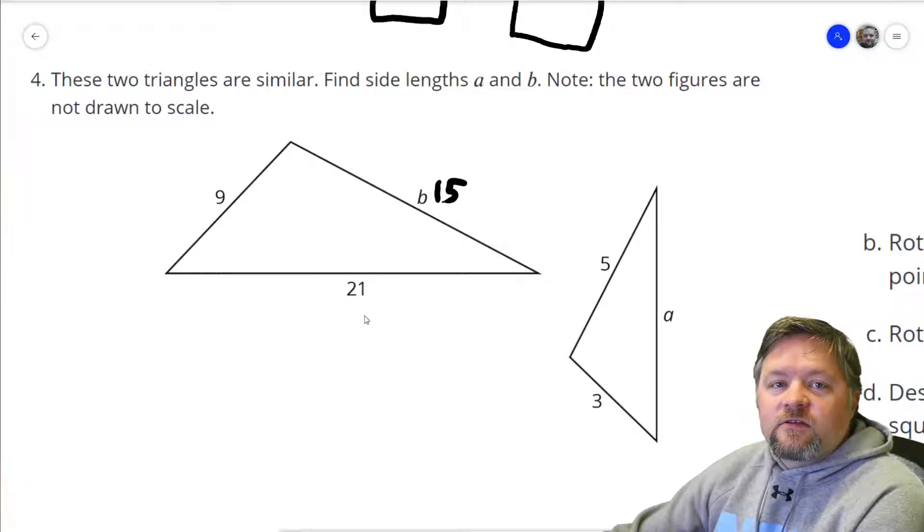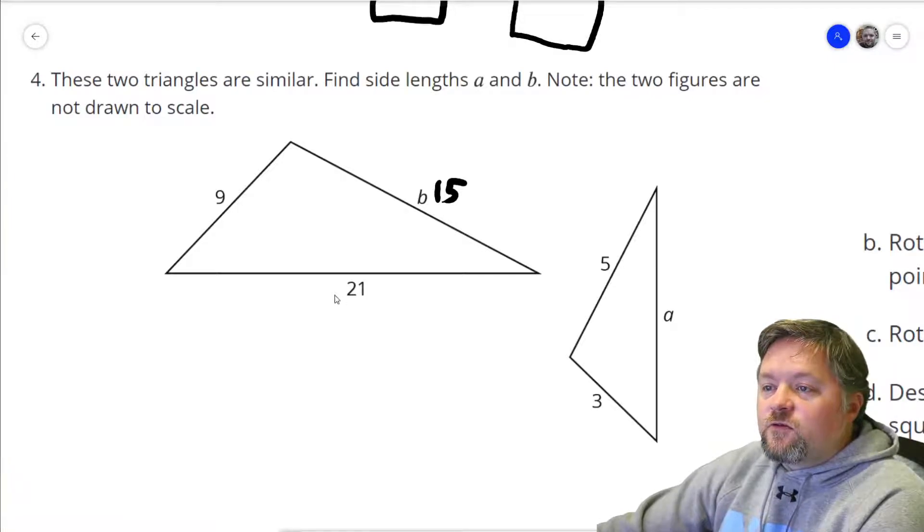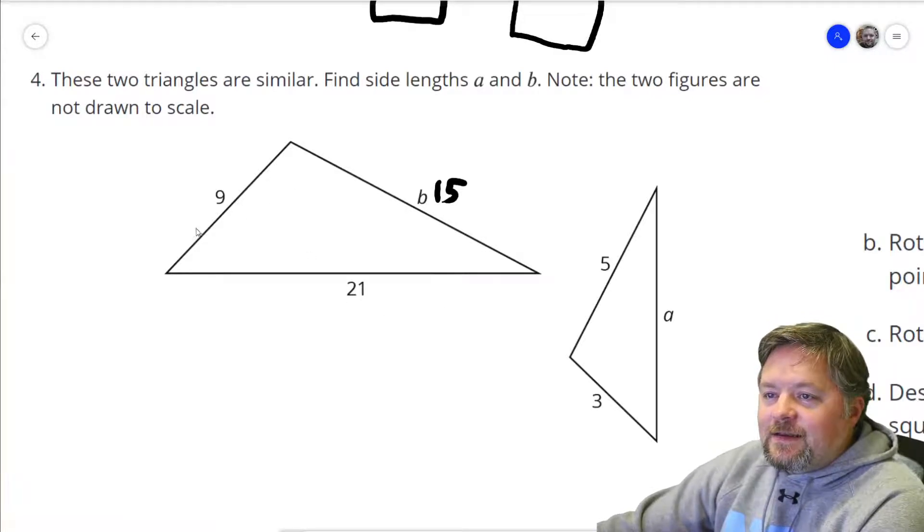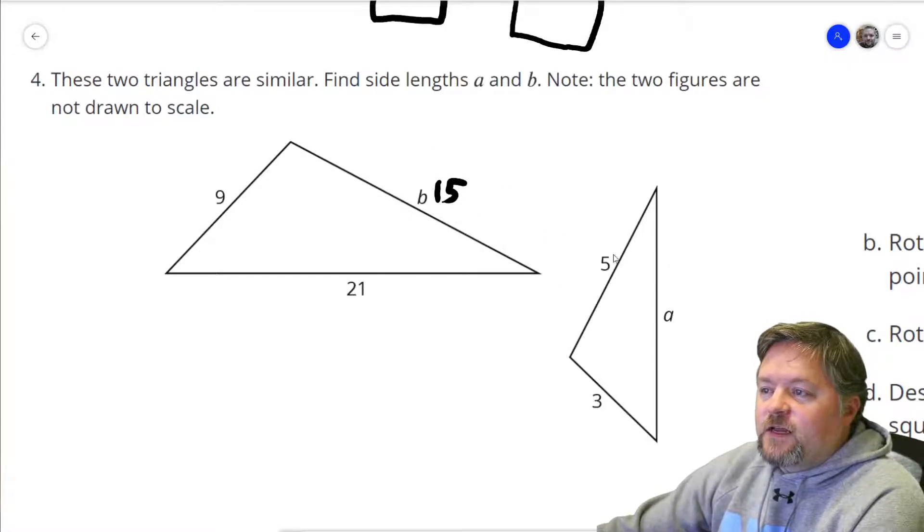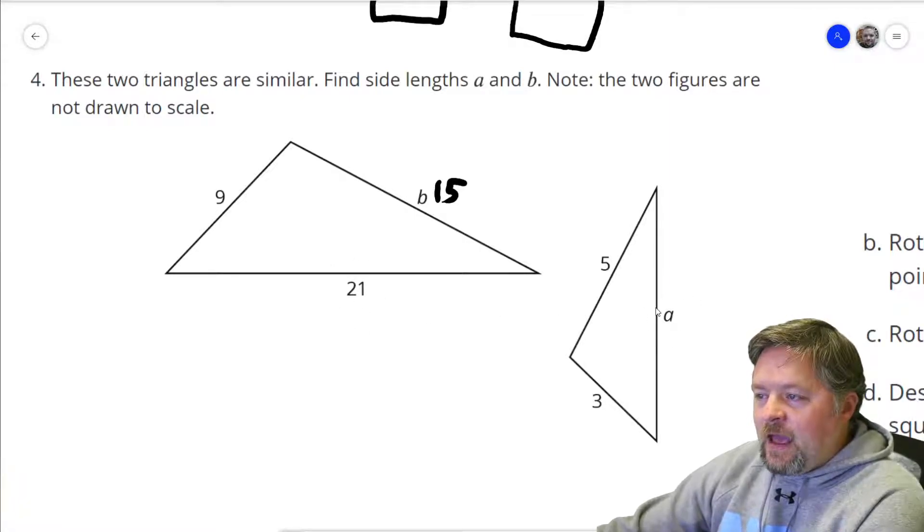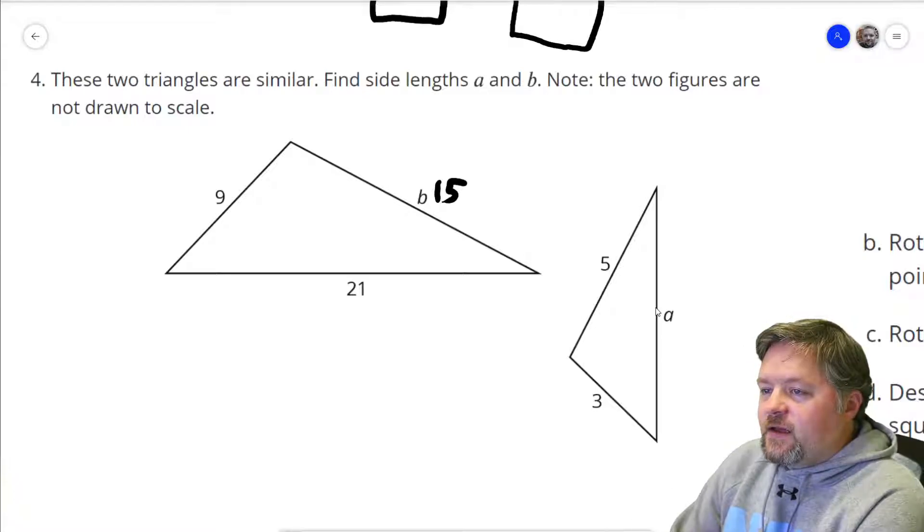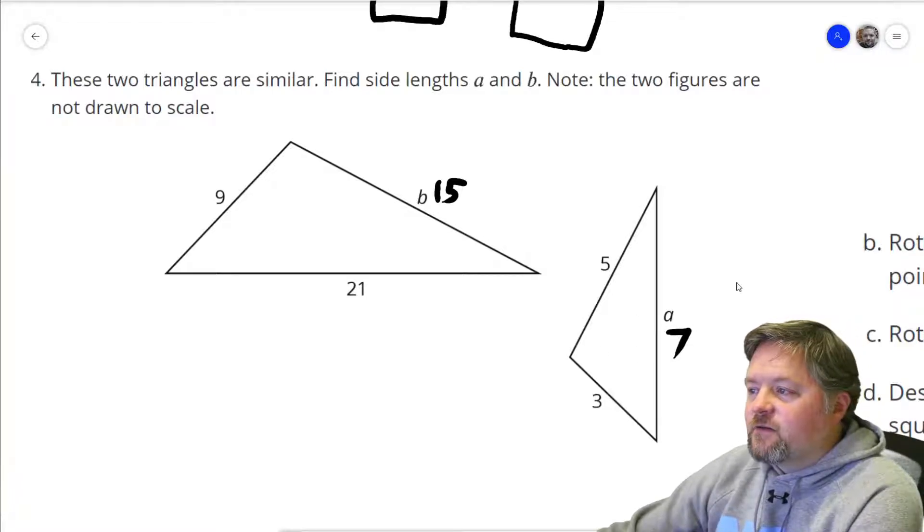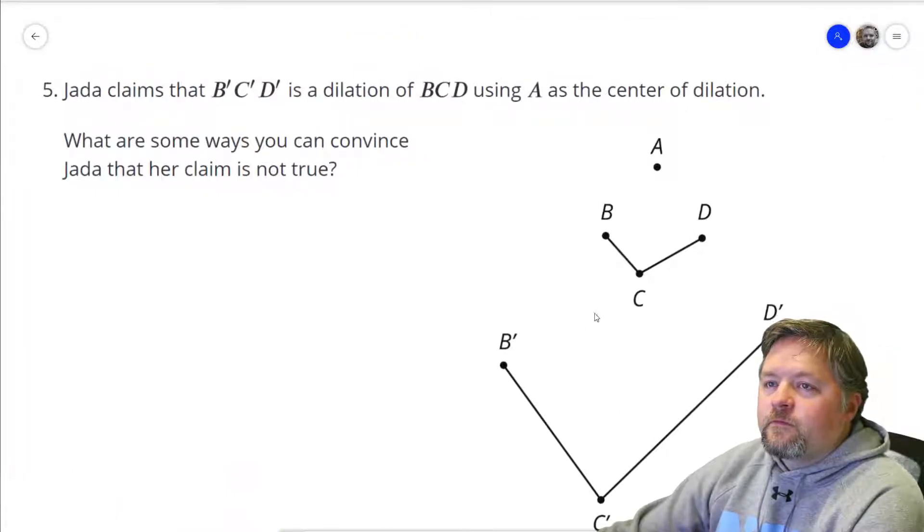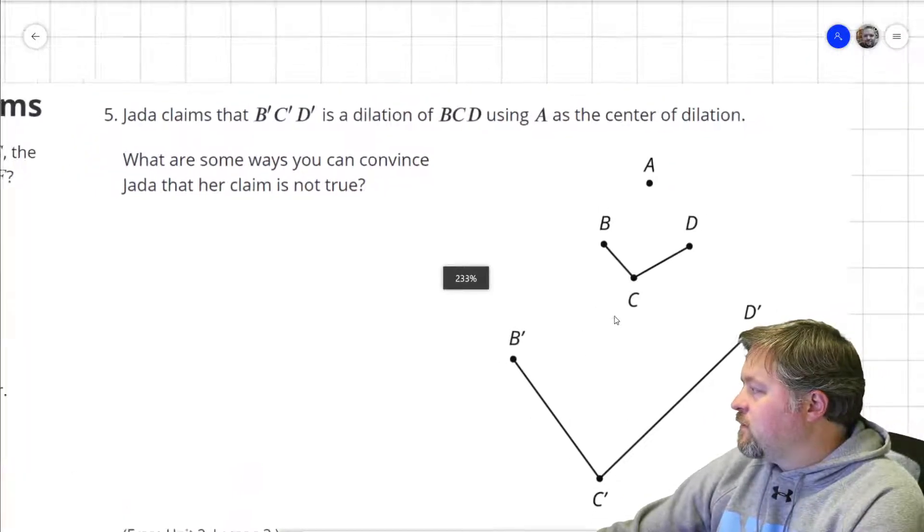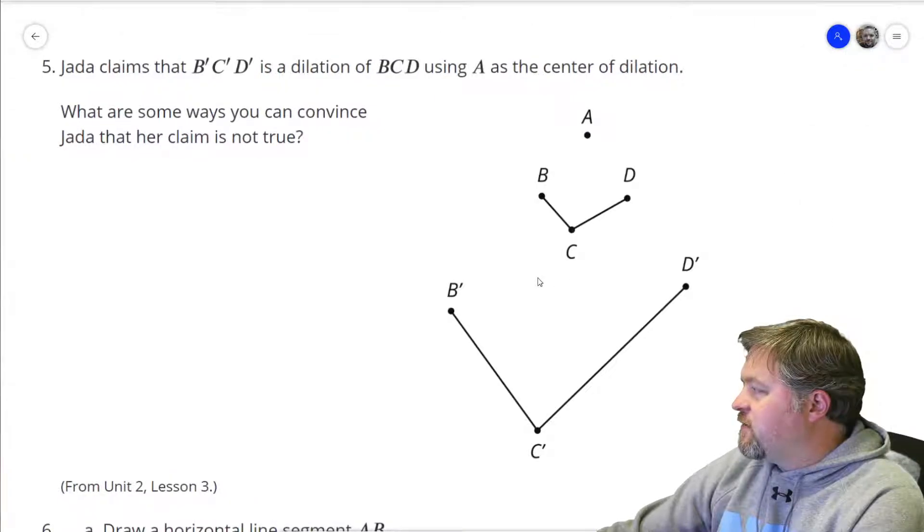Now going in the other direction, we would have to multiply 9 by 1/3 to get 3. Multiply 15 by 1/3 to get 5. Multiply 21 by 1/3 to get A. So A is 21 times 1/3, which is 7.